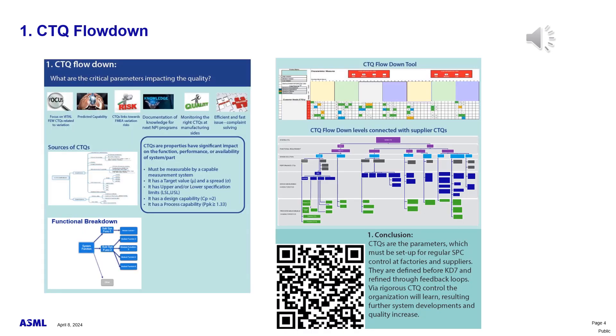The critical to quality flow down. SPC is implemented on a limited but meaningful set of parameters, the so-called critical to quality parameters. CTQs are properties whose variation causes significant impact on the variation of the function, performance or availability of our systems from the perspective of the internal and external customer. Monitoring and controlling the variation of CTQs helps in verifying industrialized product design upfront, identifying unexpected behavior earlier in the product life cycle, distinguishing structural problems from incidents, special causes in the issue resolution.